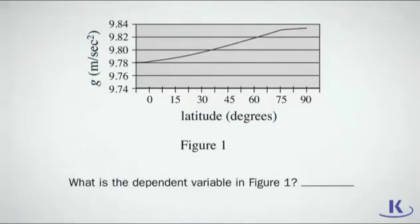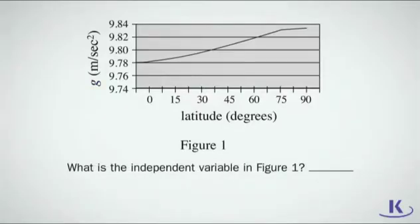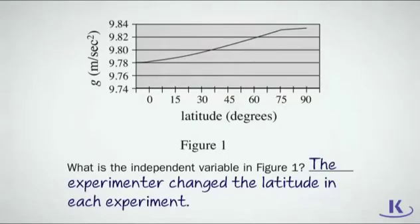What is the dependent variable, or what was observed? G. And what's the independent variable? In other words, what did the experimenter change that caused that observation? The experimenter changed the latitude in each experiment.